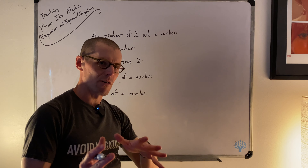A number times two: 'times' is a good word to encode multiplication. If being very literal about order, our number x times two would be x·2, but since multiplication is commutative and we have the custom of bringing constants to the front, we write it as 2x. All these phrases — the product of two and a number, twice a number, a number times two — are equivalent to 2x.